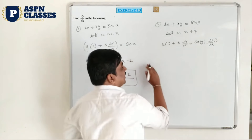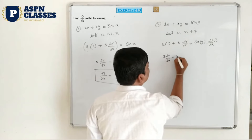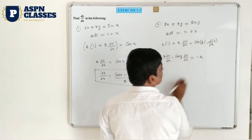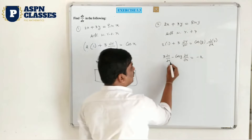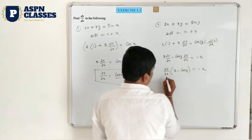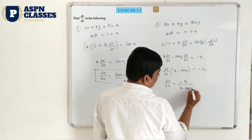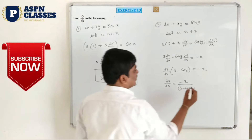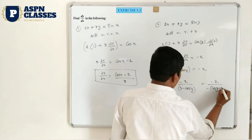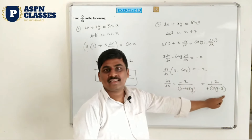Take all dy/dx to one side. Here 3 dy/dx is already there with no extra dy/dx on the right. Shift the cos y dy/dx term to this side: minus cos y dy/dx. And 2 into 1 is 2, shifted to this side means minus 2. Take dy/dx as a common factor — 3 minus cos y remaining. So dy/dx equals minus 2 divided by 3 minus cos y, or equivalently 2 divided by cos y minus 3.